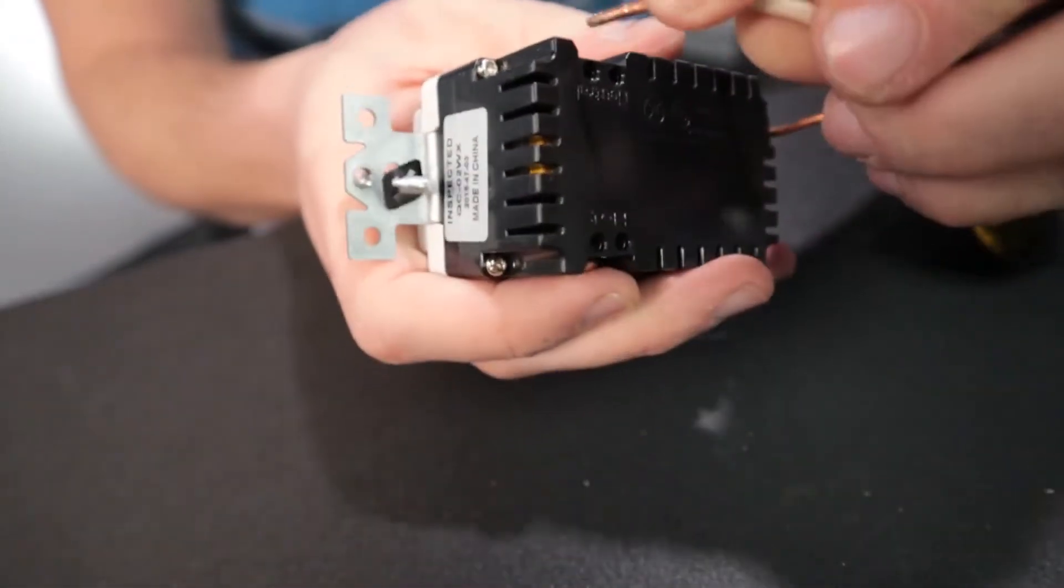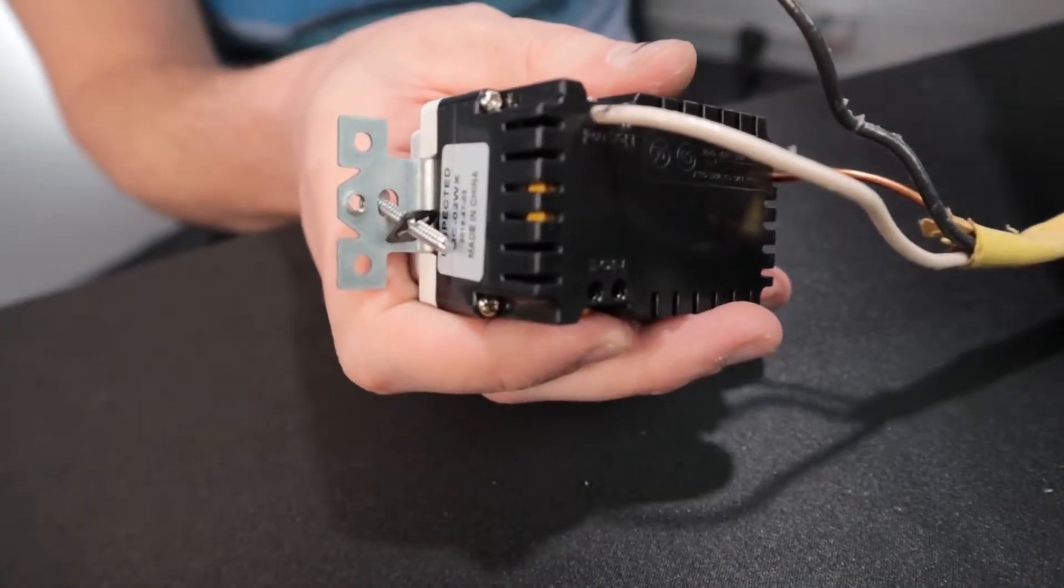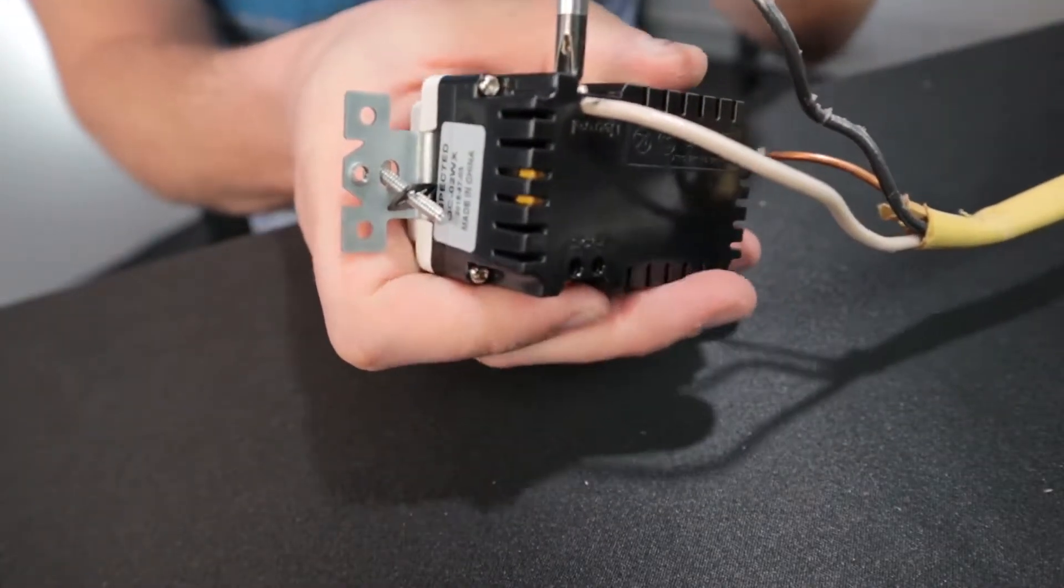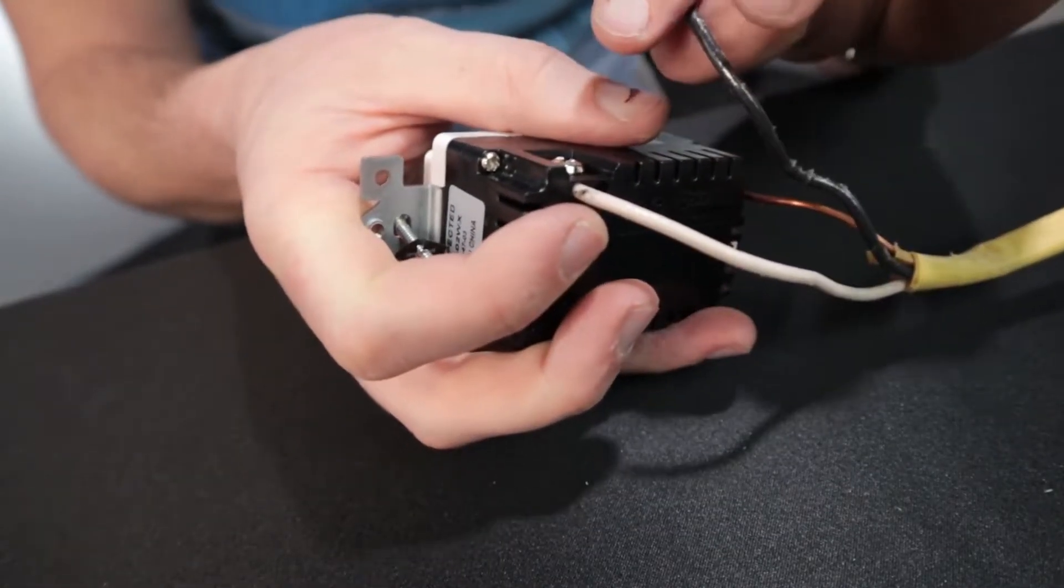Sometimes you'll go and wiggle an outlet in the wall and it'll dim your lights or cut out power for the rest of the circuit. So you want to make sure this is tight so that you don't have any issues that way.